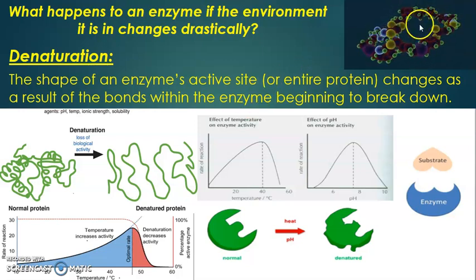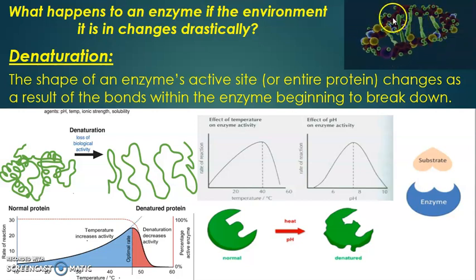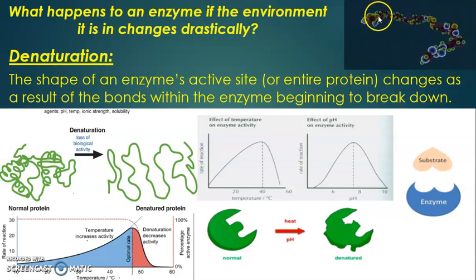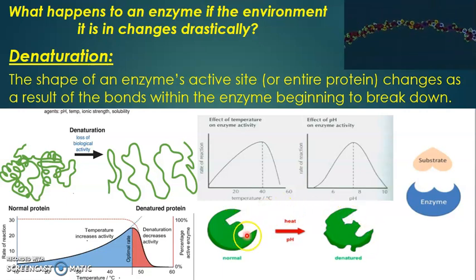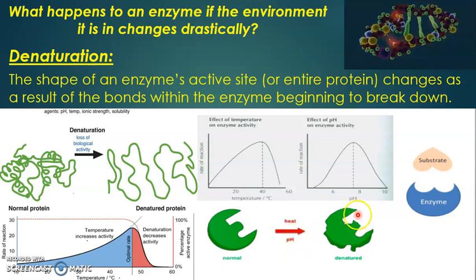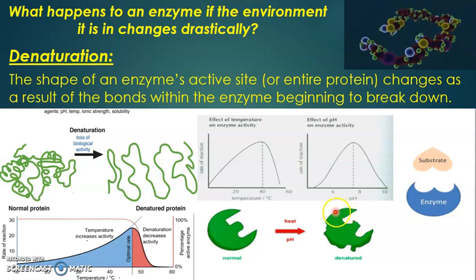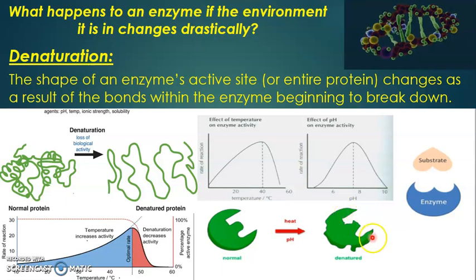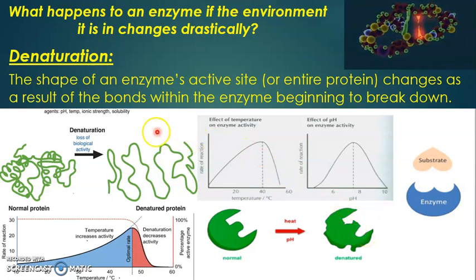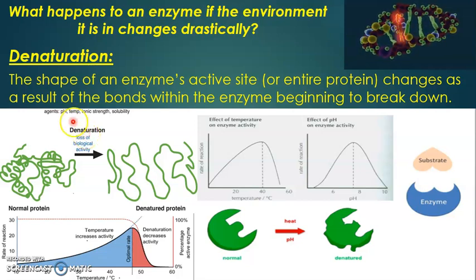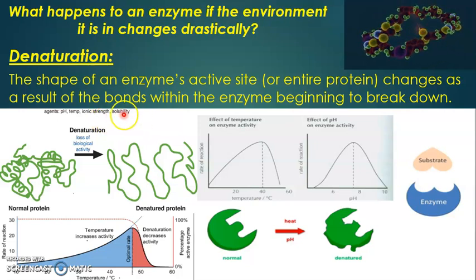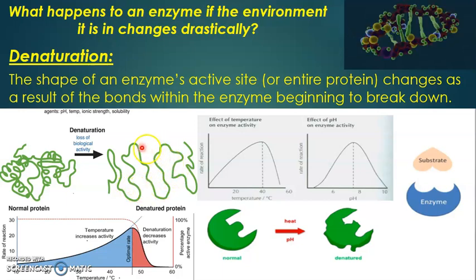In this animation, a protein in tertiary structure, when temperature or pH changes, has its hydrogen bonds start to break. The protein unwinds and changes the shape of the active site. High heat or extreme pH change causes the enzyme to unwind and denature, changing its entire shape including the active site, which can no longer function or bind to the original substrates. Denaturation can occur due to pH, temperature, ionic strength, or solubility — though we're focusing mainly on pH and temperature.